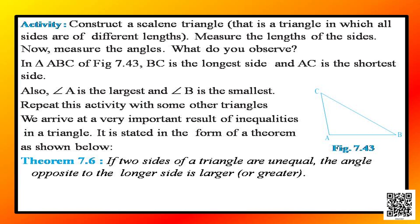Theorem 7.6 states: if two sides of a triangle are unequal, the angle opposite to the longer side is larger or greater. We may also prove this theorem by taking a point P on BC such that CA is equal to CP, as given in figure 7.43.